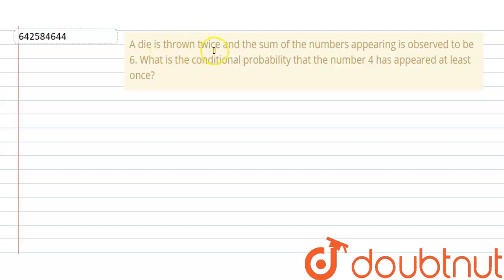Question is: a die is thrown twice and the sum of the numbers appearing is observed to be 6. What is the conditional probability that the number 4 has appeared at least once?